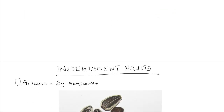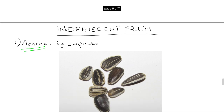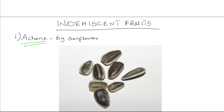Then we have the indehiscent fruits. These do not split upon drying. They include the achene. An achene is a fruit that contains one seed, and the ovary wall is separated from the seed. For example in the sunflower, these are several fruits of the sunflower known as achenes. Within each fruit there is one seed, and the seed coat is not fused to the pericarp — it is separated.